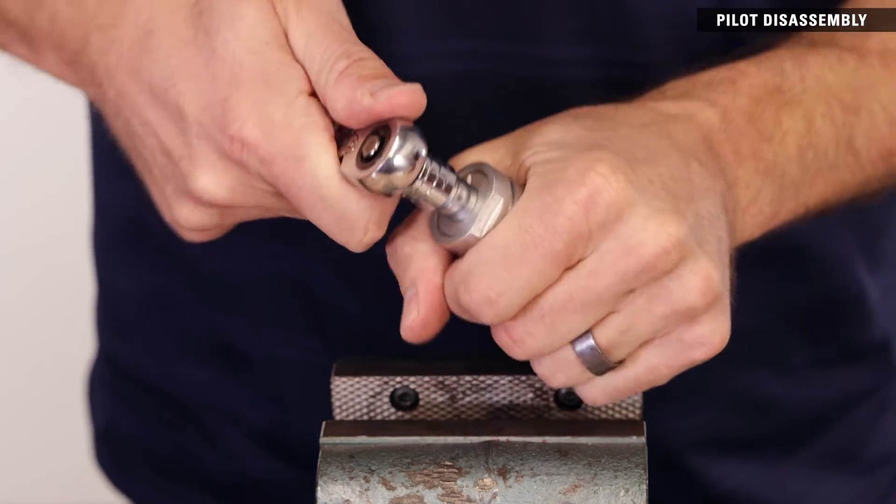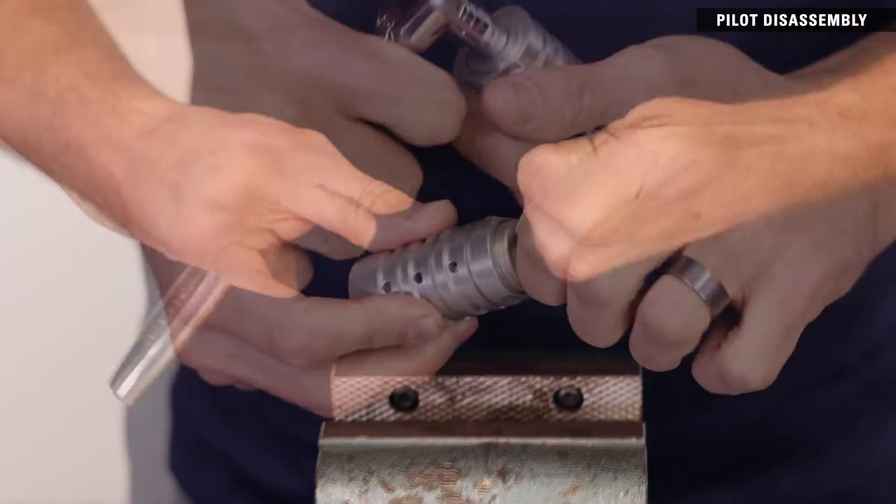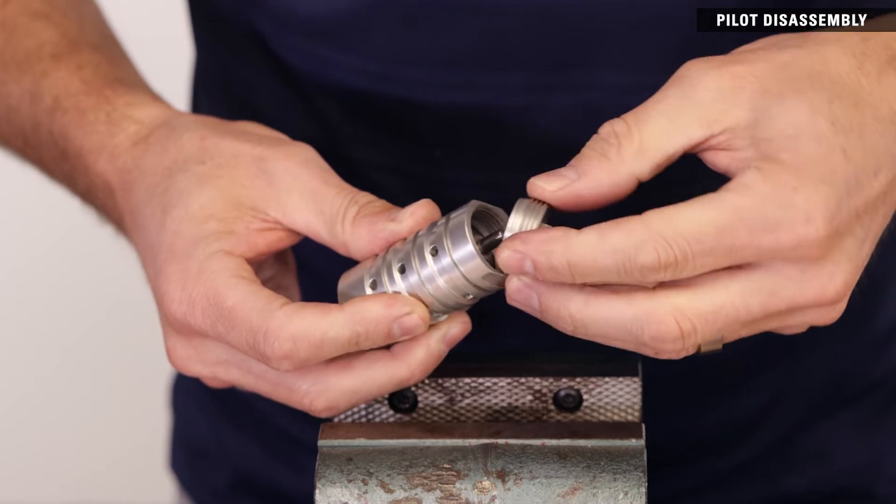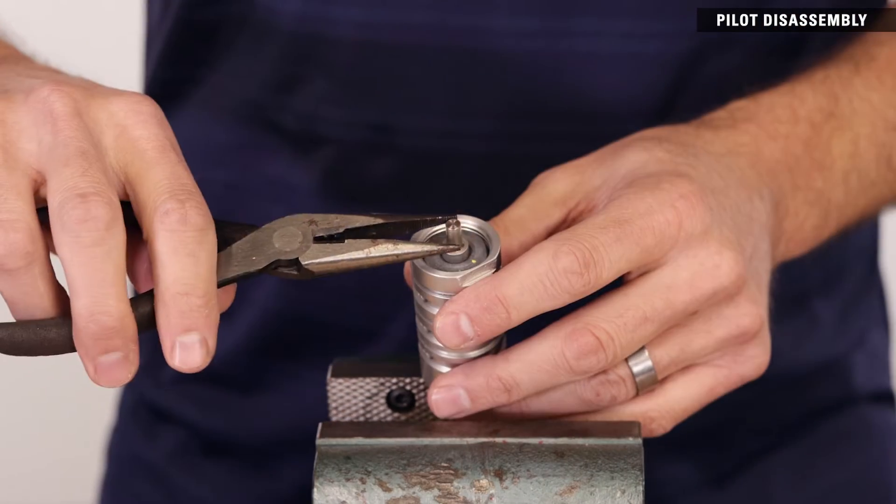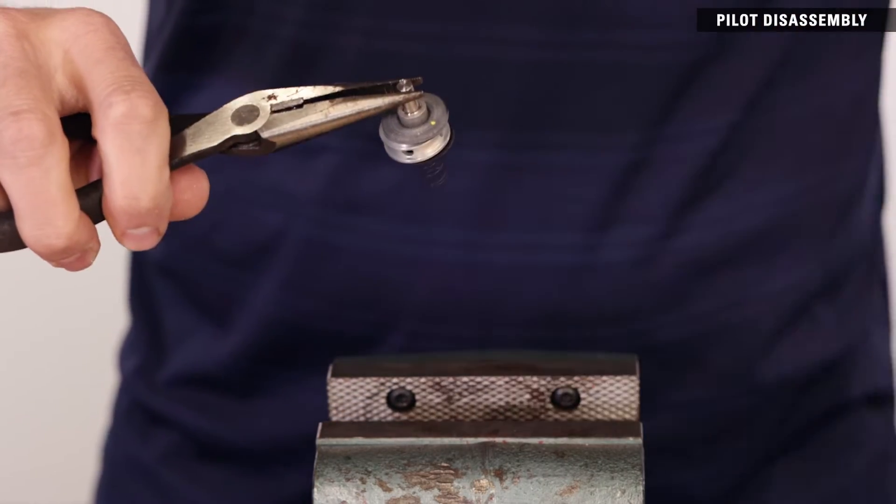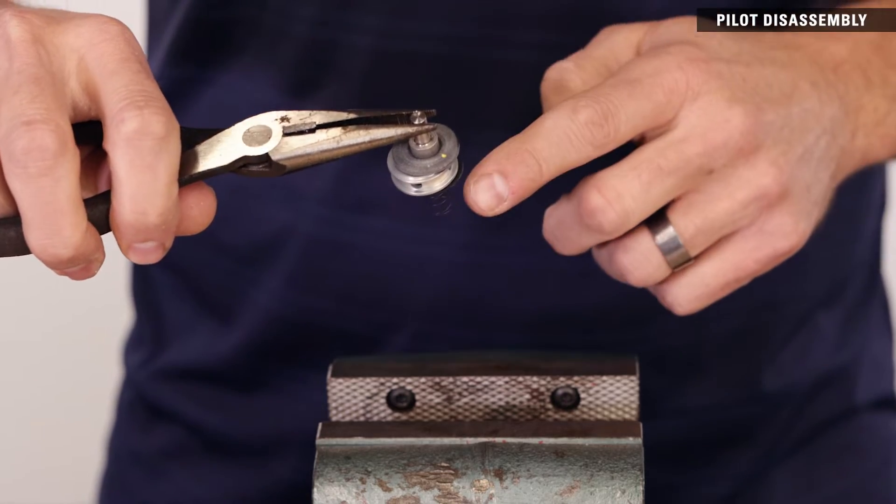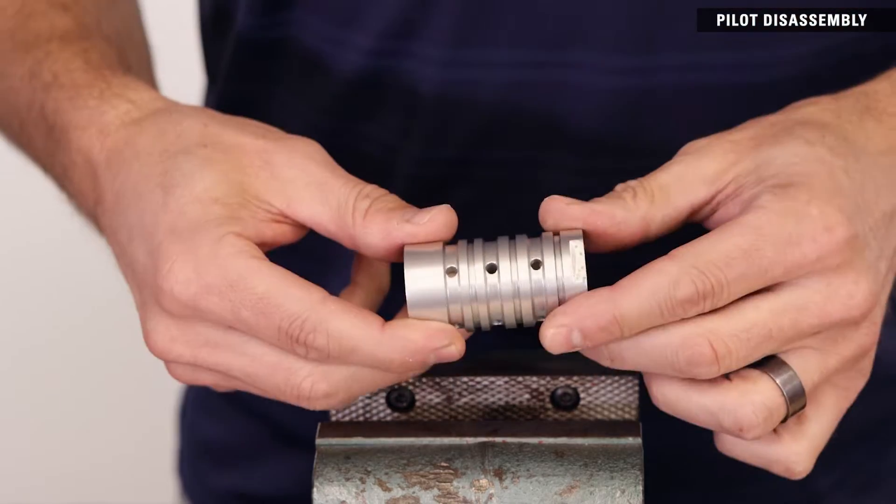Unthread the pilot cap with a 3-8 inch socket or adjustable wrench. Use pliers to remove and discard the lower diaphragm assembly and lower spring. Clean out all communication holes.